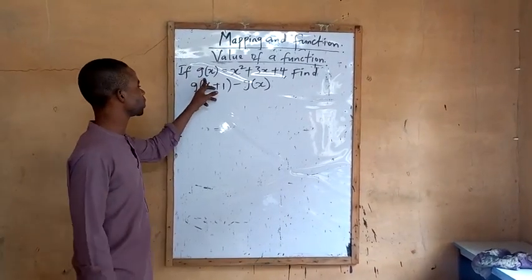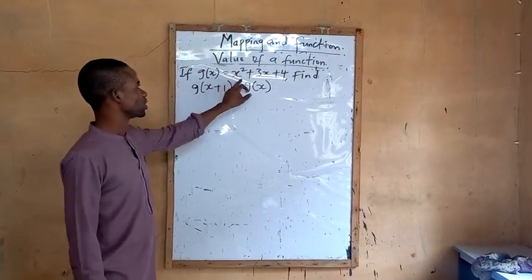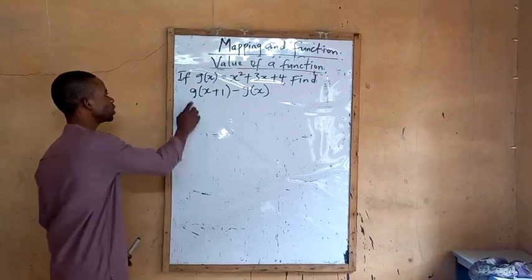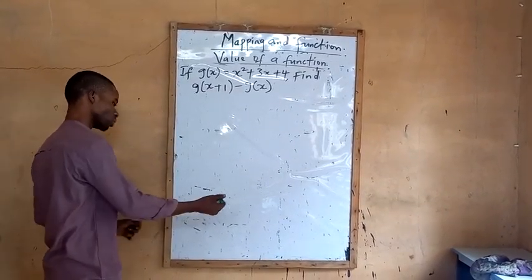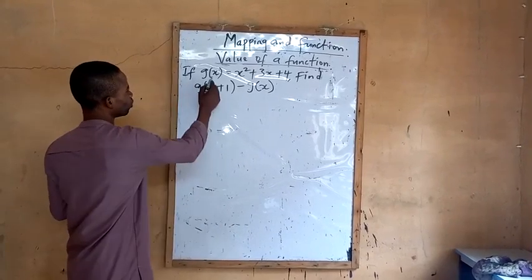If g(x) is x squared plus 3x plus 4, find g(x+1) minus g(x). Like I told you, if you look at this...